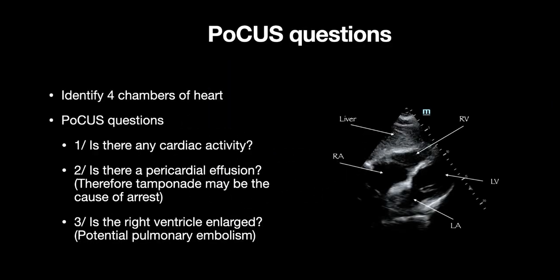There are three key questions to answer when performing echo during a cardiac arrest. The first is, is there any cardiac activity present? Secondly, is there a pericardial effusion and therefore this may suggest tamponade as the cause of the arrest? And thirdly, is the right ventricle enlarged, which could suggest a pulmonary embolism?